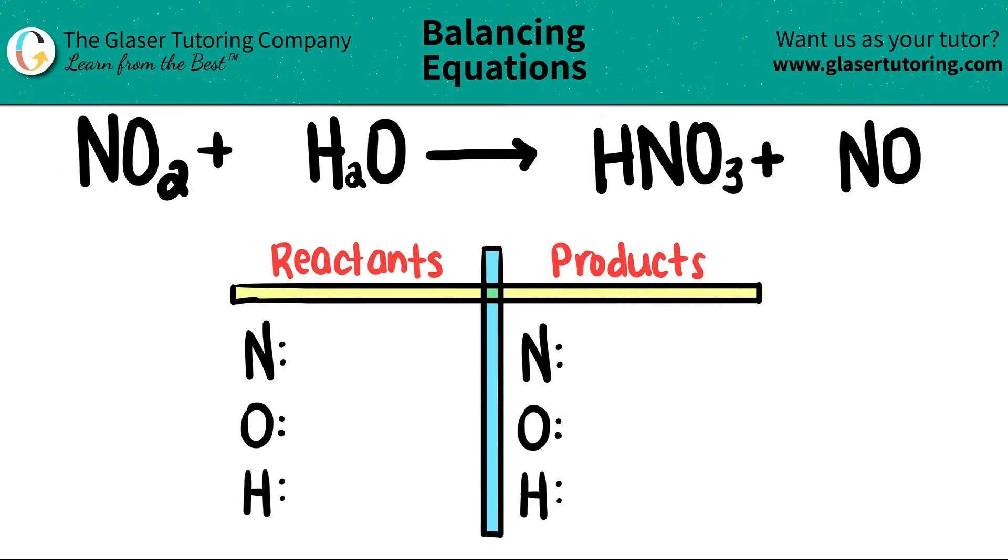Let's start with the left hand side. For nitrogen, I don't see a subscript. There's only one, so I have one nitrogen. Oxygen, just be careful. I see that I have an oxygen here and here, so I have to add the two together. I have two oxygen plus one oxygen. So two plus one is a total of three. You have a total of three oxygen on the left hand side, and then for the hydrogen, there's a two here, signaling that I have two hydrogens.